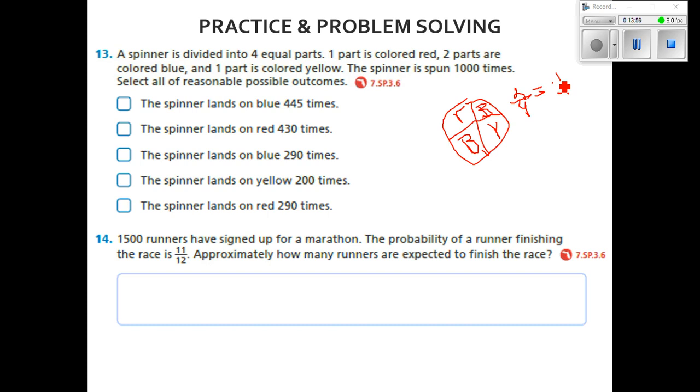So since we know it's going to be one-half of the time, then we've got one-half of 1,000, and one-half of 1,000 will be 500. So will the spinner land on blue 445 times? No, that is not the theoretical probability of it. Select all reasonable possible outcomes. Oh, is it possible that it will land 445 times? Well, I guess it's possible. That's pretty close to 500.